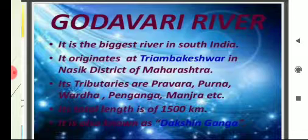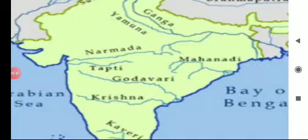River Godavari is also called Dakshinaganga. Its tributaries include Pravara, Purna, Vardha, Penaganga, Manjira, etc. River Godavari starts at Triyambakeshwar in Nasik district of Maharashtra, from the Western Ghats. In the map you can observe how the Godavari river is located — from Maharashtra, the line indicating Godavari is drawn towards east, and then you can observe its W-shaped path to Andhra Pradesh, with the upper path of the W shape joined with the line indicating Godavari.